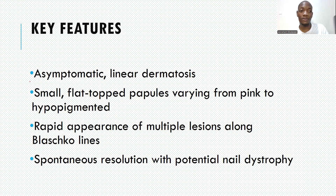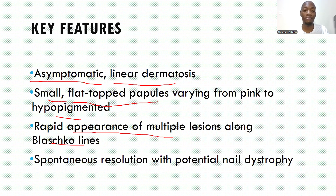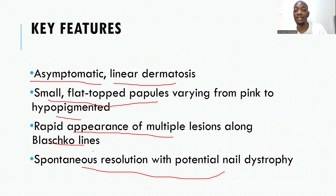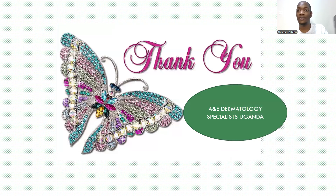The key things to remember are: most cases are asymptomatic; it is a linear dermatosis with lichenoid papules varying from pink to hypopigmentation; there can be rapid appearance of multiple lesions along Blaschko's lines; spontaneous resolution is possible; and sometimes it can extend to involve the nails, resulting in nail dystrophy. Thank you very much — that was our segment on lichen striatus. See you in the next video. Remember to subscribe, share, and comment.